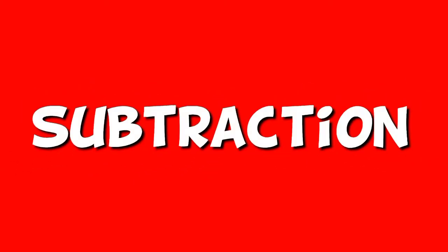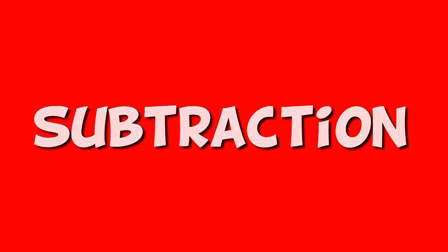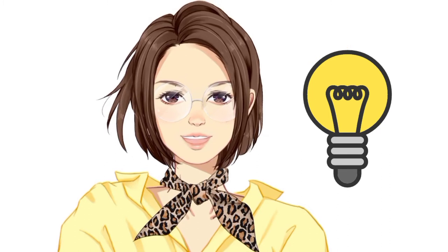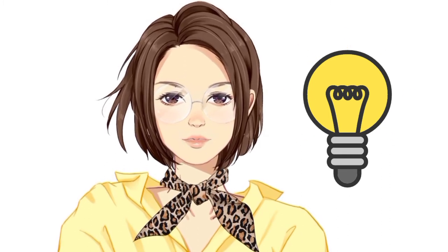Subtraction! That is our math lesson for today. There are three birds on a branch of a tree. If one bird flies away, how many birds are left on the branch? For us to find the answer, we shall do subtraction.